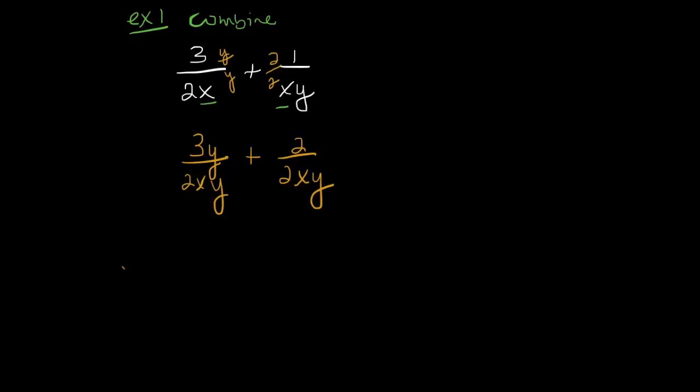Now I have a common denominator. I can add my numerator, so 3y plus 2 over my common denominator of 2xy. If you chose to make your common denominator the lowest common denominator, there won't be any real need to simplify. You've done your simplifying already.